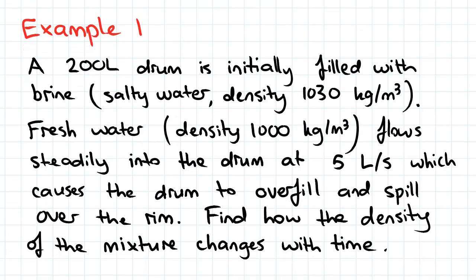Here's our example: a 200 liter drum is initially filled with brine, which is a salty fluid. We've been given the density of 1030 kilograms per meter cubed.